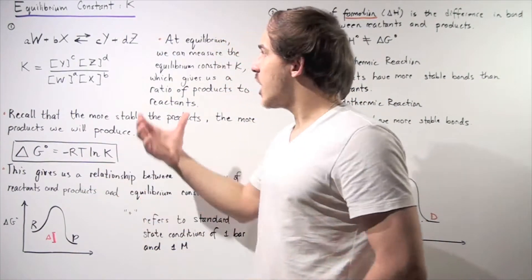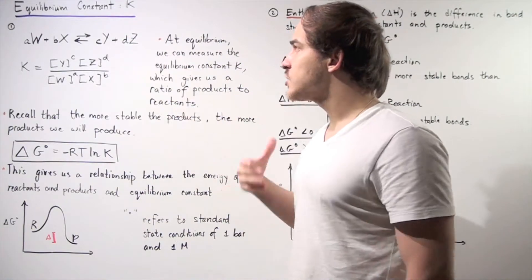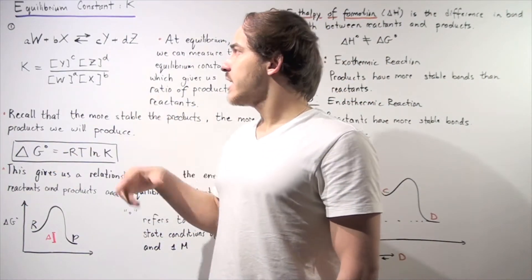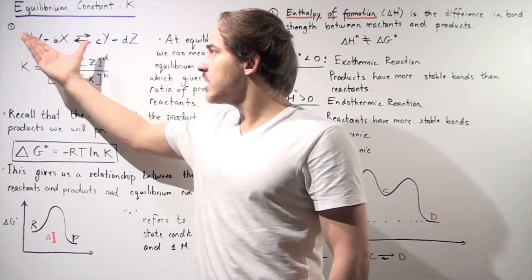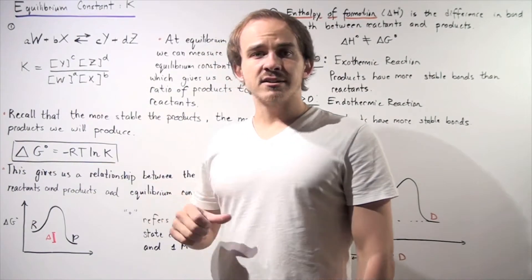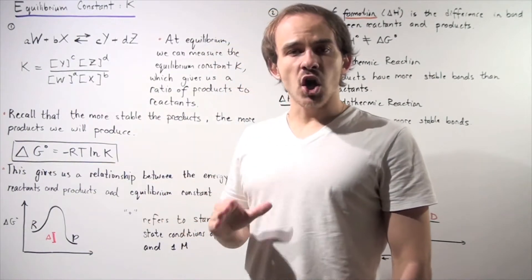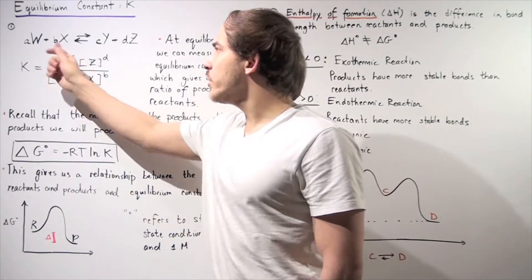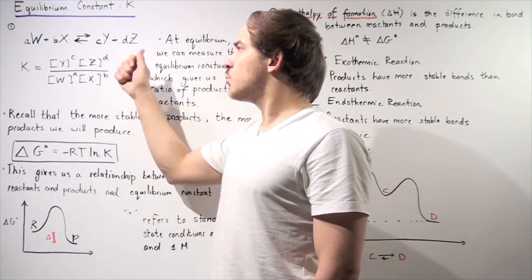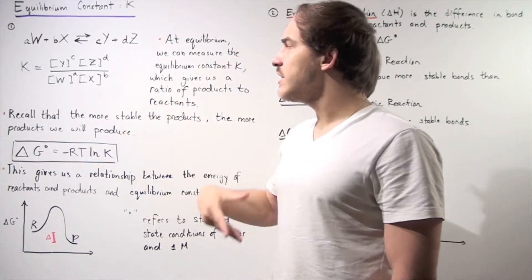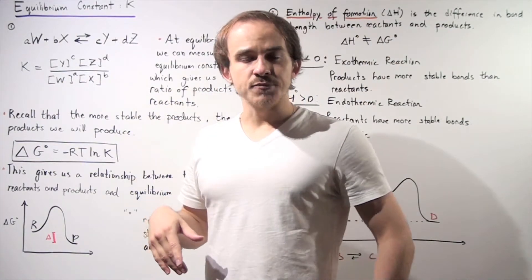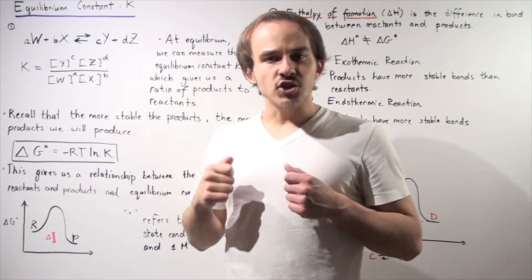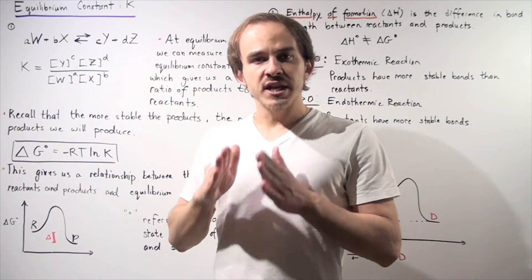In the beginning, the rate of production of my products will be very high, and the reverse rate — the rate of production of my reactants — will be very low. As time progresses, the rate of the forward reaction will decrease and the rate of the reverse will increase, until the two rates are equal.